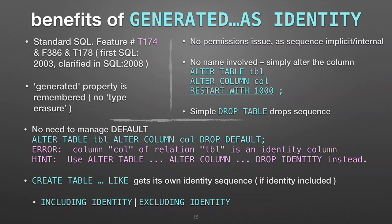We're restarting — here we're doing that restart to change the sequence number. Notice that we're doing it on the column, on the table. We don't have to refer to the name of the sequence. There is a name — there is a sequence and it has a name — but it's being handled for you in the background like you would expect. If we do the drop table, it drops the sequence. All the behavior you expect.